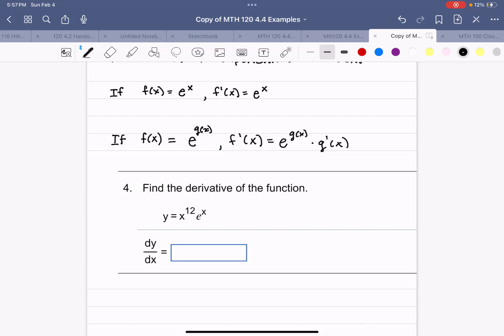Now the most important thing to realize before you start here is that you have the product of two functions. Because this contains an x, x to the 12th is our first function. And because this contains an x, e to the x is our second function.